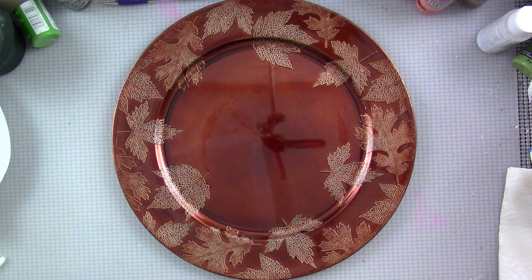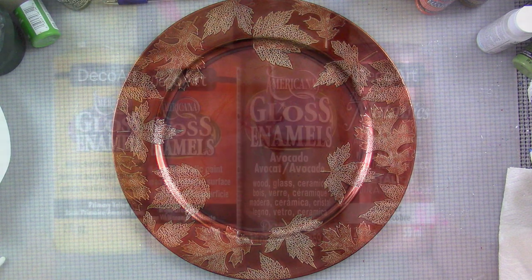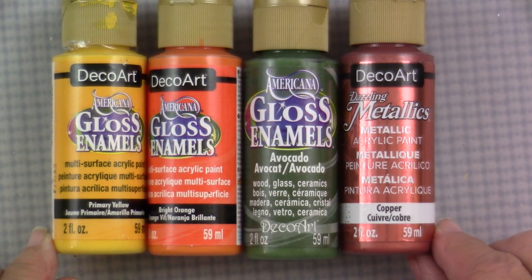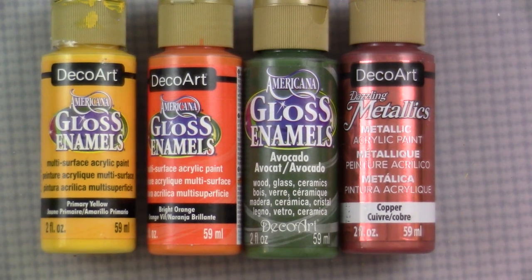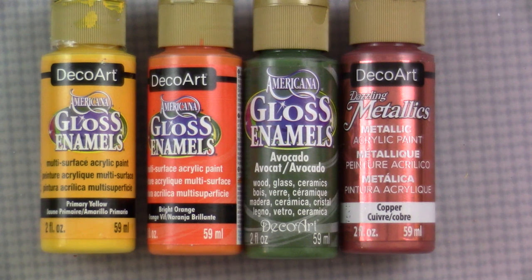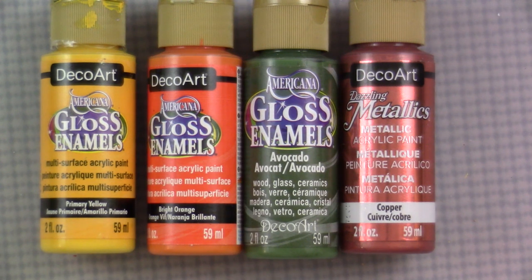So for my base I'm using this 13 inch charger plate that I found at Hobby Lobby in their fall section. And for the paints I'll be using the DecoArt Gloss Enamels in primary yellow, bright orange, avocado, and I'll be accenting with the Dazzling Metallics Copper.